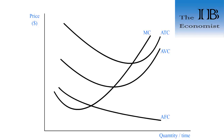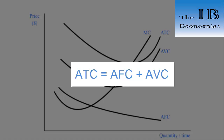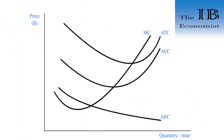The average fixed cost is a continuously falling curve. As output increases the average fixed cost decreases but will never become equal to zero — it converges with the horizontal axis but never intersects it. Remember that the average fixed cost plus the average variable cost equals the average total cost, and this information is already presented on the diagram: the distance between the ATC and AVC is equivalent to the distance between the horizontal axis and the AFC.